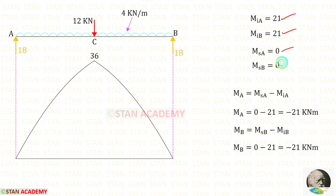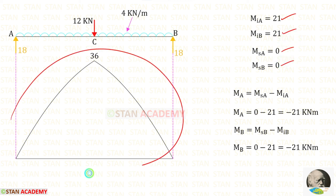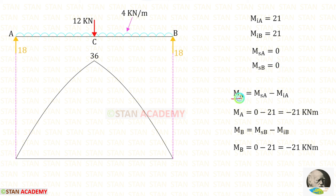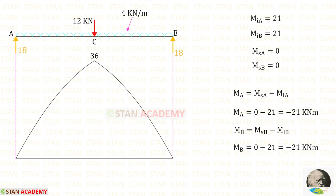Now let us find MSA and MSB. From the bending moment diagram, the bending moment at point A is 0, so MSA = 0. Similarly at point B, MSB = 0. Using the formula MA = MSA − MiA, we get MA = 0 − 21 = −21 kilonewton meter. In the same way, MB = 0 − 21 = −21 kilonewton meter.